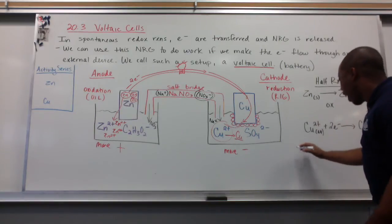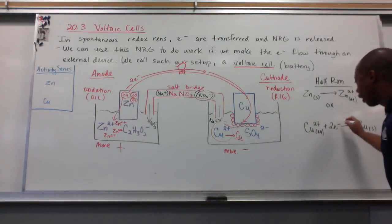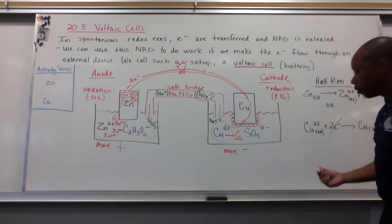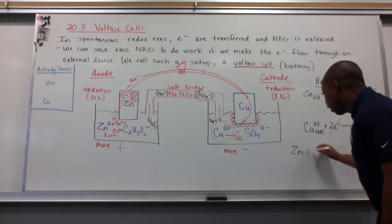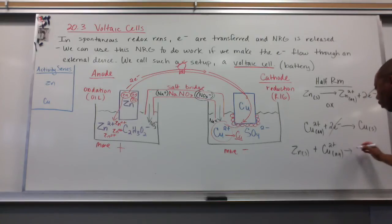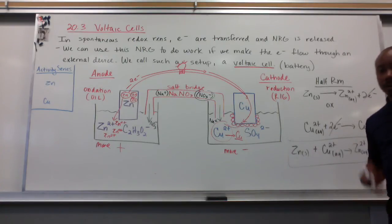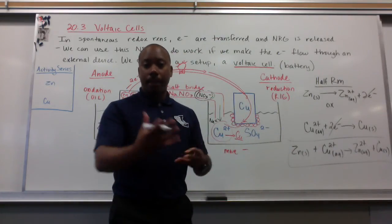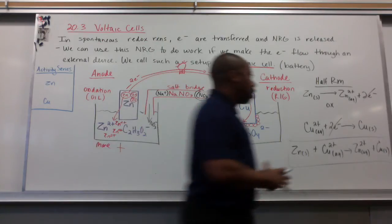Writing this net reaction here, my electrons would cancel out because I lost two, I gained two. That's a net of zero. So solid zinc metal reacts with the copper 2 plus in solution, forming zinc 2 plus in aqueous solution and solid copper. That would be your net redox equation here. Of course, we know we can further balance this depending on whether the solution is acidic or basic. But that can be tacked on later on.